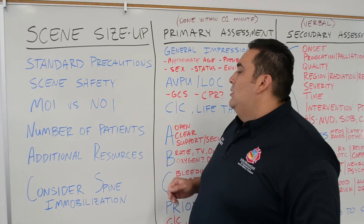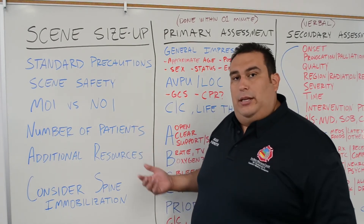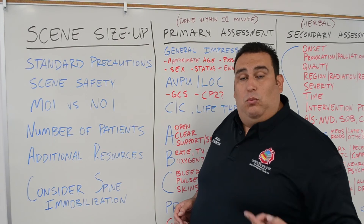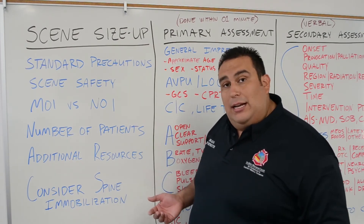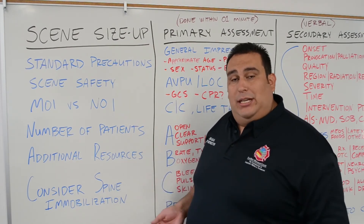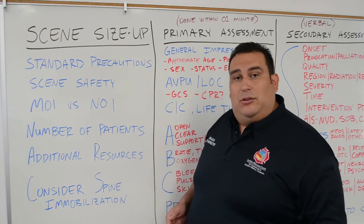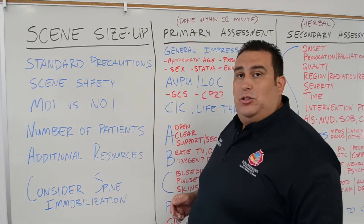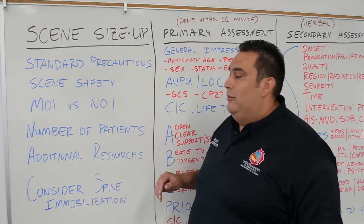Number of patients — how many patients do we have? Typically and commonly we're only going to have one patient. But for a motor vehicle accident or any type of multiple-patient incident — like food poisoning where the whole household was affected — we're going to look at how many patients we have and get a head count.